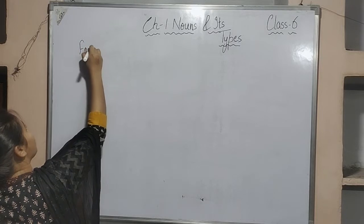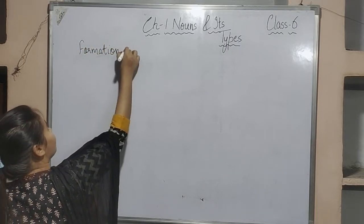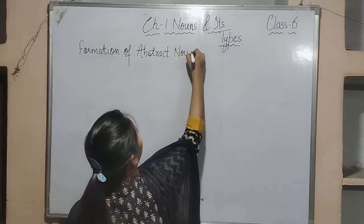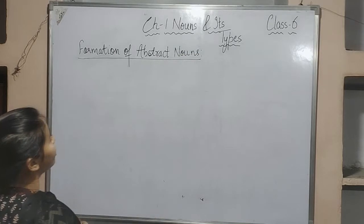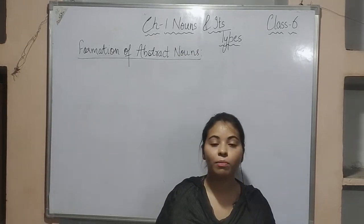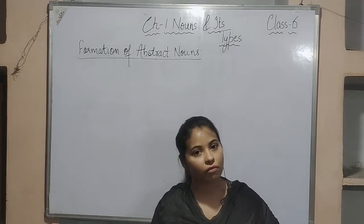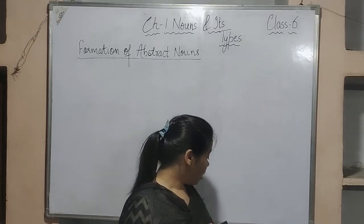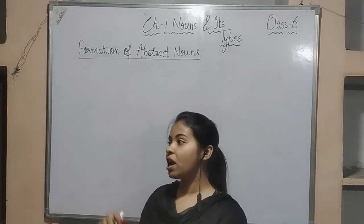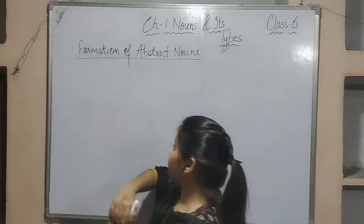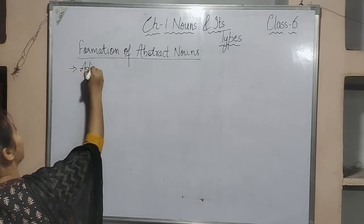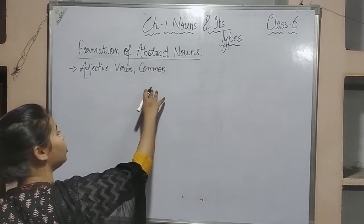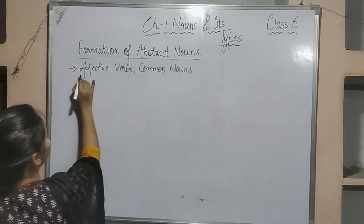Abstract nouns can be formed from adjectives, verbs, and common nouns. Today's topic is the formation of abstract nouns. In English grammar, there are certain rules to form abstract nouns. I am going to discuss those rules — how you can form abstract nouns using adjectives, verbs, and common nouns, one by one and step by step.